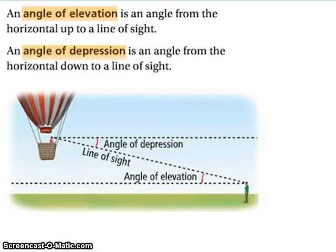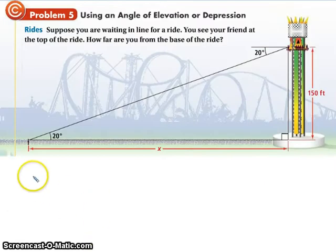Angle of elevation, angle of depression, fancy words for check this out, use trig to figure it out. Angle of elevation is if I'm standing on the ground looking up at somebody, angle of depression is if they're up in the sky and they're looking down at me. So here's a situation: I'm standing over here and I'm looking up at my friend who's on the top of a ride, and I know that the ride is 150 feet high and I know I'm looking up at them at a 20 degree angle.